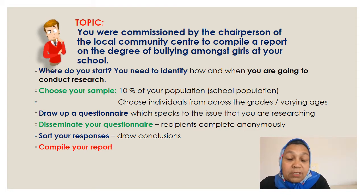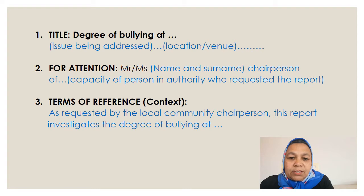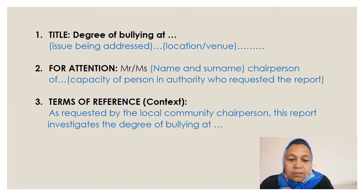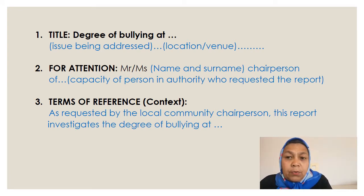That is a lot to take in, so in the next few slides I'm going to break it down into its simplest forms and explain each step in detail. The formal report has a specified format. You start with your title — you write the word 'Title', use a colon, and then state what issue you are addressing in your research and at which venue or geographical region you conducted the research.